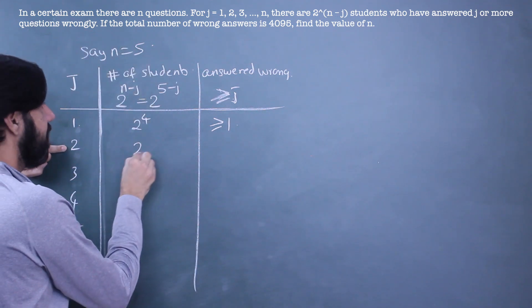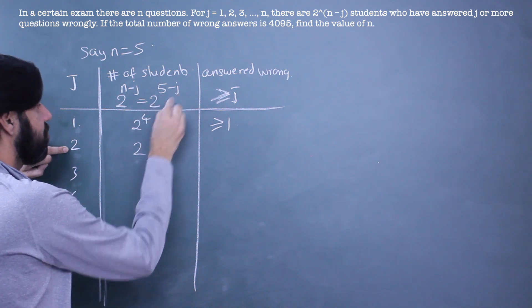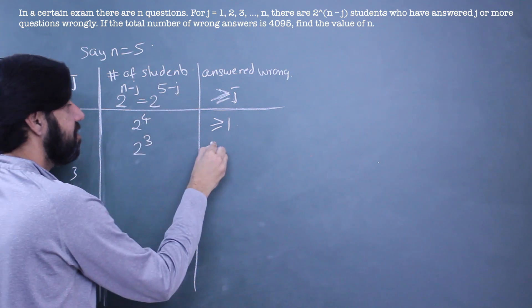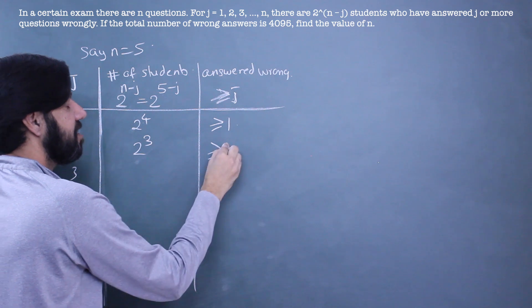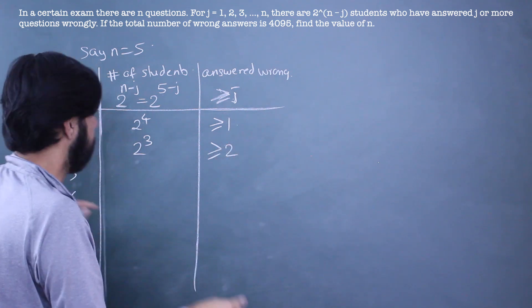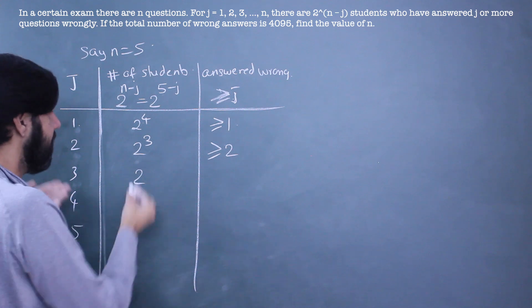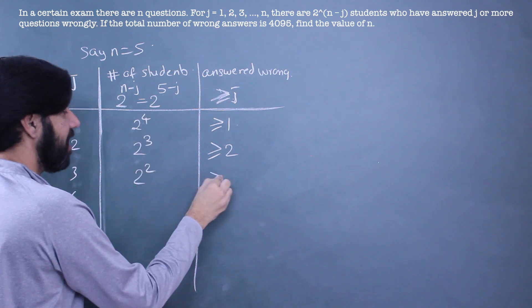When j is 2, this will become 5 minus 2, 2^3. These 2^3 students have answered 2 or more than 2 wrong. You see the pattern? Working with numbers, you can easily move very fast.